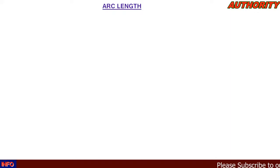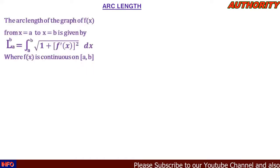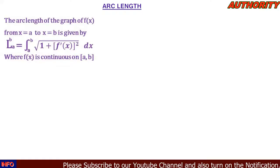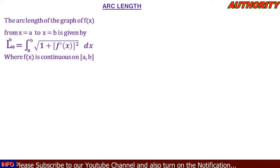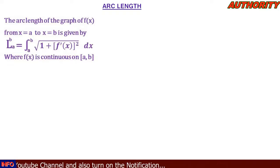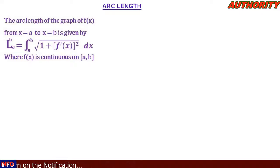Welcome. Today let's talk about arc length. The arc length of the graph of f(x) from x = a to x = b is given by the length L = integral from a to b of square root of (1 + [f'(x)]²) dx, where f(x) is continuous on the closed interval [a, b].